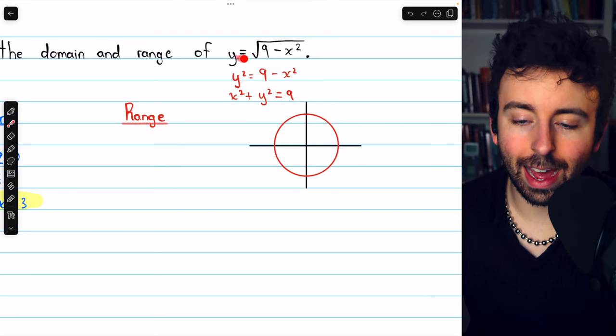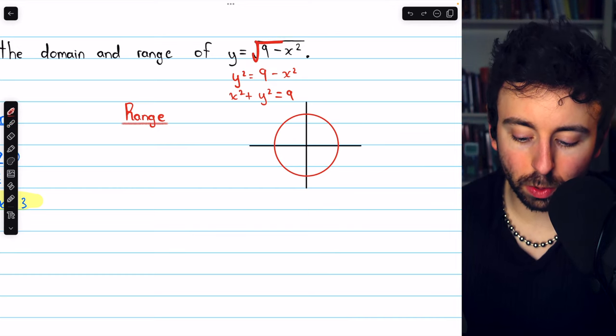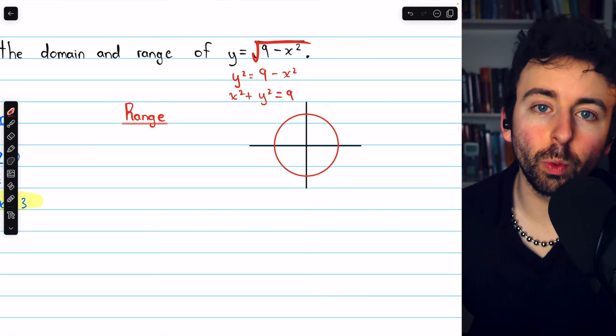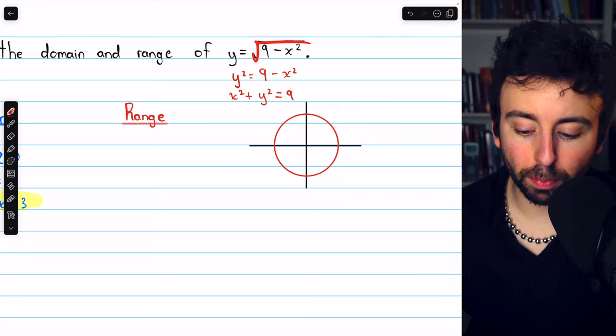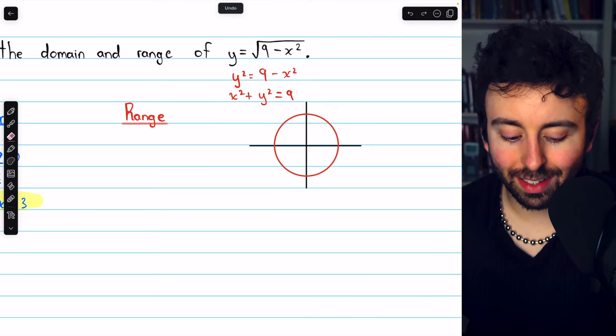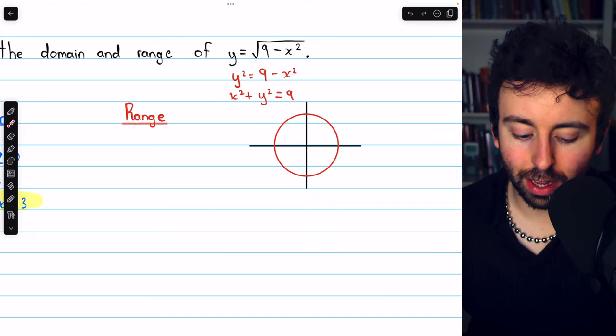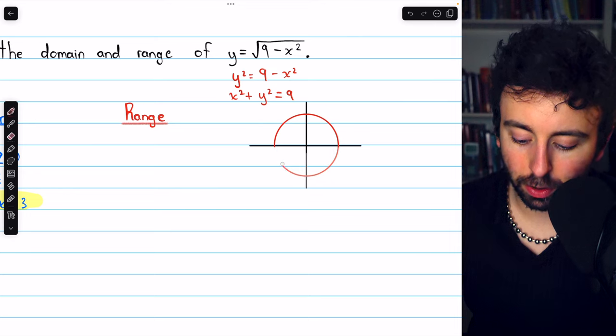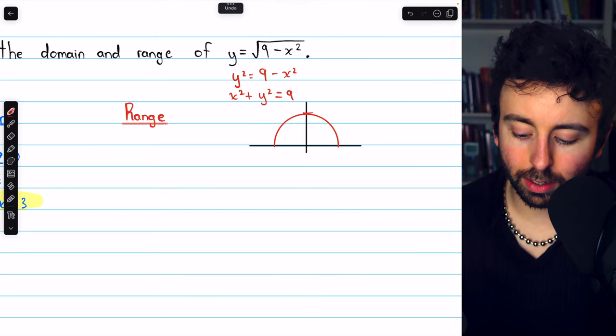However, this function that we have is not this entire circle. The square root function only outputs positives. Otherwise, it wouldn't be a function if it output positives and negatives. It only outputs positives. That means the bottom half of this circle, where y is negative, is not actually part of the graph of this equation. So we would erase that bottom half of the circle. Hence, this is actually the equation of a semicircle with a radius of 3.